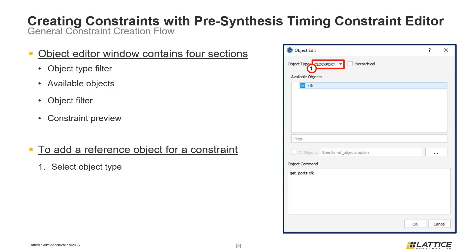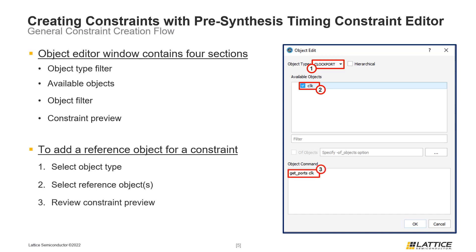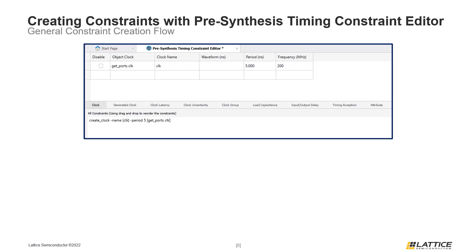The first step in selecting a reference object is to select the type of object using the object type filter. Once the correct object type has been selected, the next step is to select which objects to reference using the checkbox next to an object's name. In the example on the slide, the object called 'clock' was selected, however multiple objects can be selected depending on the project and type of constraint. Once the correct reference objects have been selected, review the constraint preview area to ensure correctness, then click OK to confirm your selections.